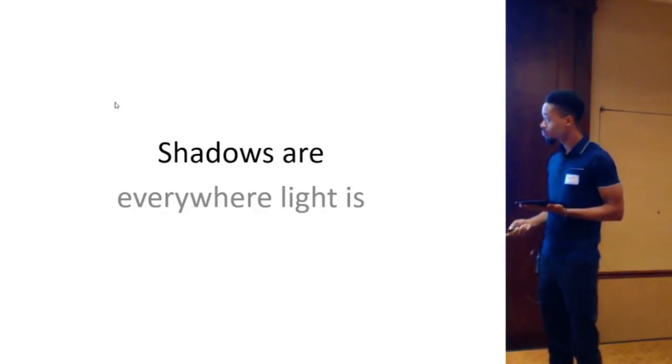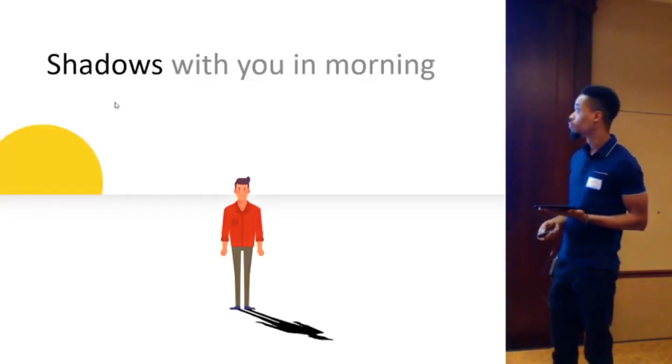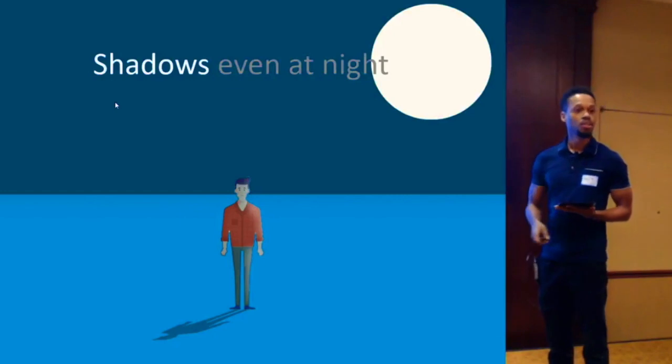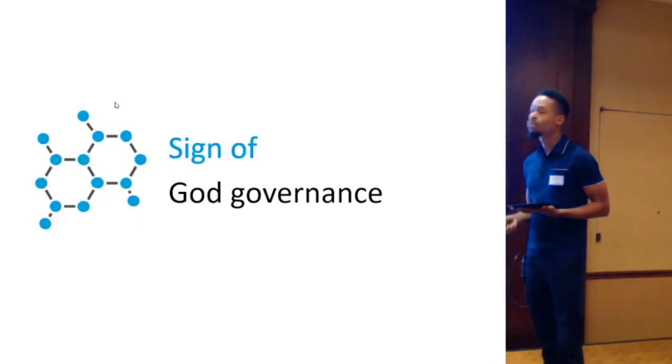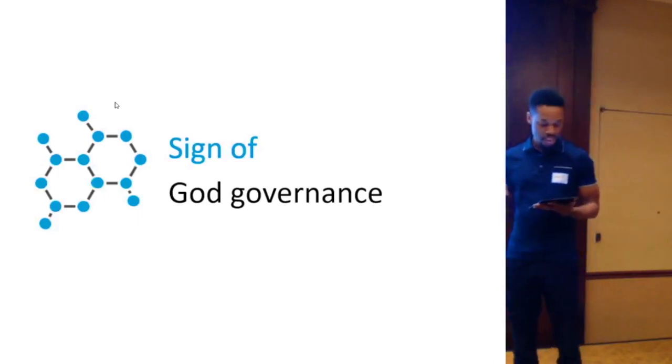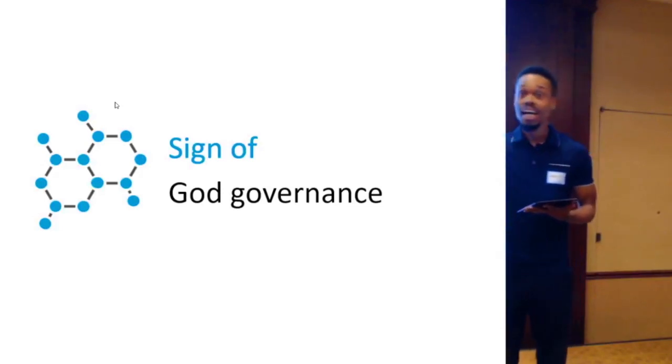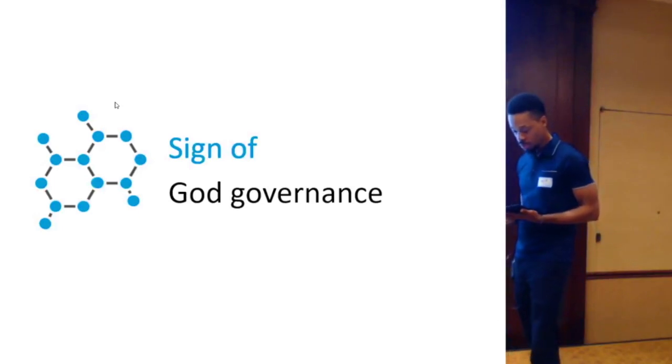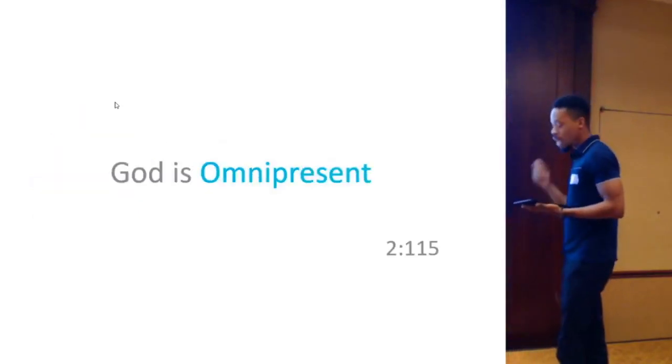Because shadows are everywhere wherever their light is. And you're never alone without your shadow. In the morning, your shadow is there. At noon, your shadow is there. Sunset, your shadow is there. Even at night, your shadow is there. You're never alone with your shadow. And this is a sign of God's governance. Because that reality, the constant presence of that shadow, is a sign that God is omnipresent, that he's always with you, that you're always under his lordship.